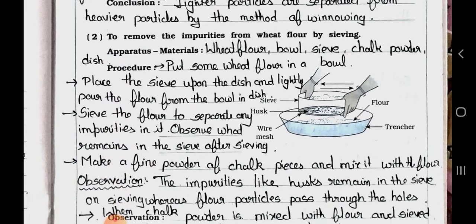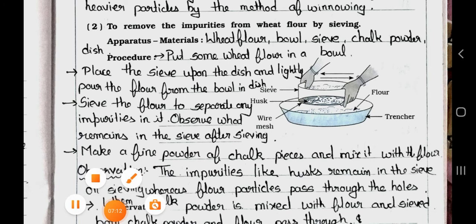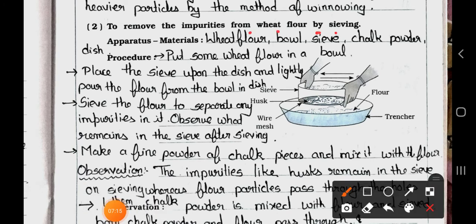Now see number 2: To remove the impurities from wheat flour by sieving. Apparatus and materials: Wheat flour, bowl, sieve, chalk powder, dish.